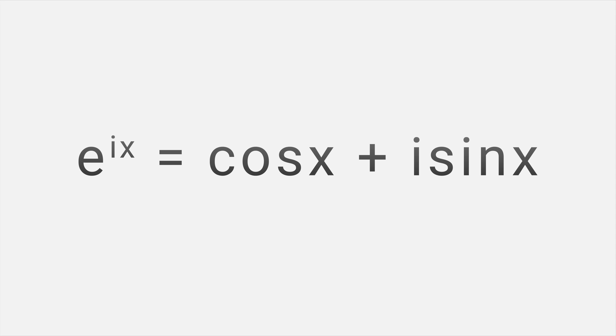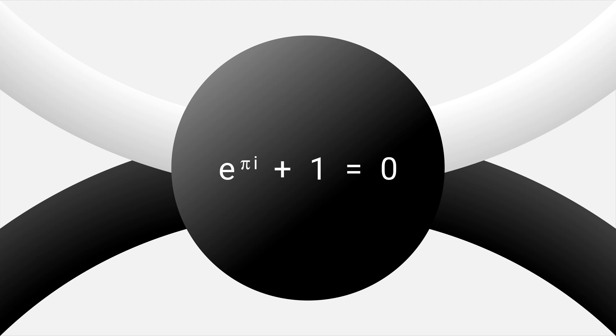This formula is amazing because it relates five fundamental constants in mathematics. In fact, if we plug x equal to π, we get the famous Euler's identity, which is considered by many to be the most remarkable formula in mathematics.